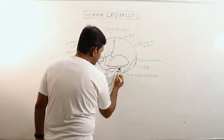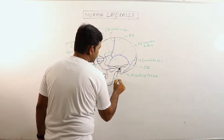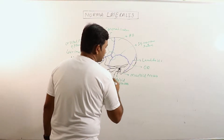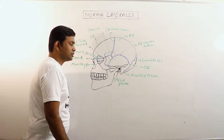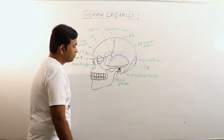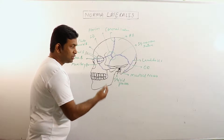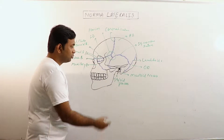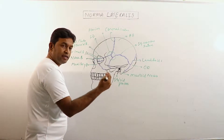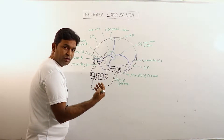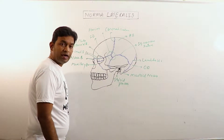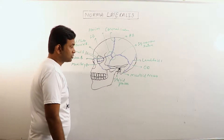Now this is the styloid process. Styloid process is also a pointed, spine-like structure emerging from the lowermost part of the temporal bone, or the mastoid part of the temporal bone. It also projects anteriorly, inferiorly, and medially, and it is anteromedial to the mastoid process.